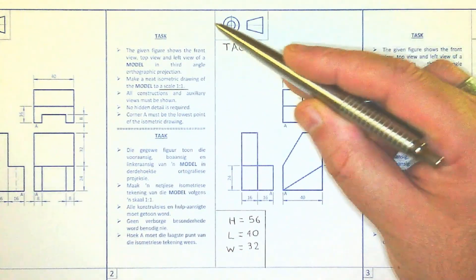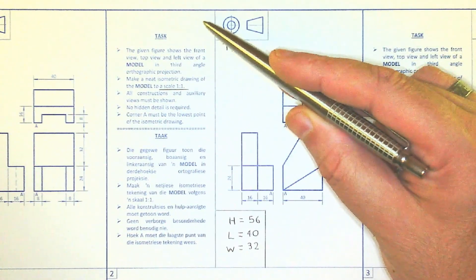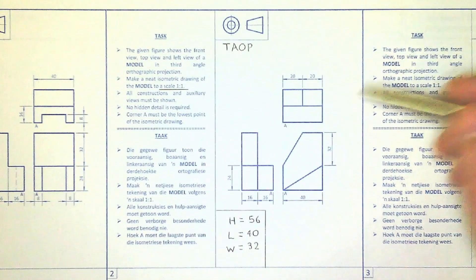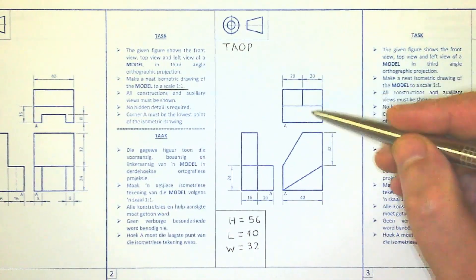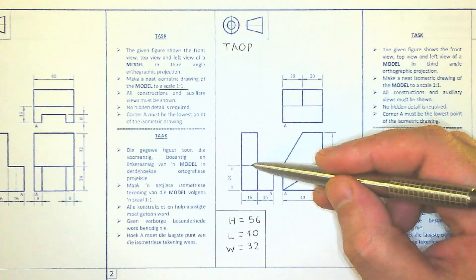If it was on the left side then it would have been in first angle orthographic projection. But simply put, because the top view is at the top, therefore this must be in third. So this is the top view, the front view and the left view.